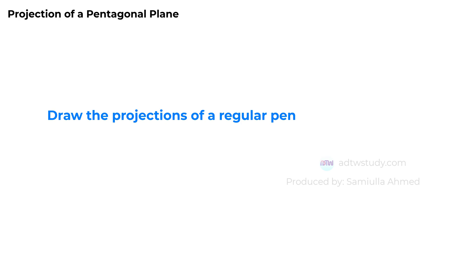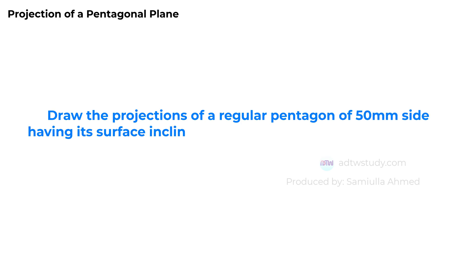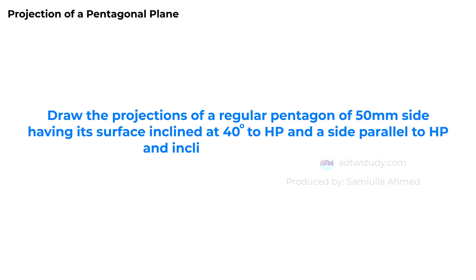Draw the projections of a regular pentagon of 50 mm side, having its surface inclined at 40 degrees to HP and a side parallel to HP, and inclined at an angle of 50 degrees to the VP.